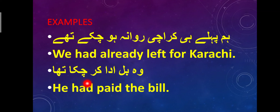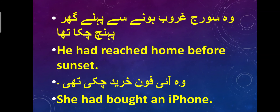The subject is 'he' and we use 'had' as helping verb. He had paid the bill — subject, helping verb, third form of verb, then object. 'Wo suraj gurub hone se pehle ghar pahunch chuka tha' — He had reached home before sunset. Subject, helping verb, third form of verb, object — before sunset. 'Wo iPhone khareed chuki thi' — She had bought an iPhone.